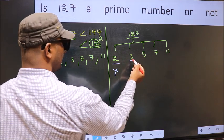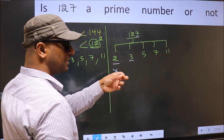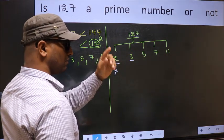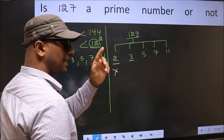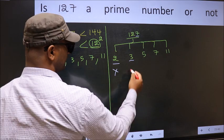Next number 3. To check divisibility by 3, add the digits. 1 plus 2 plus 7, we get 10. And 10 is not divisible by 3. So this number is also not divisible by 3.